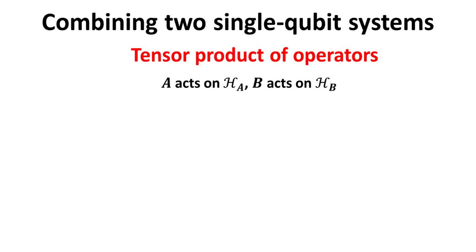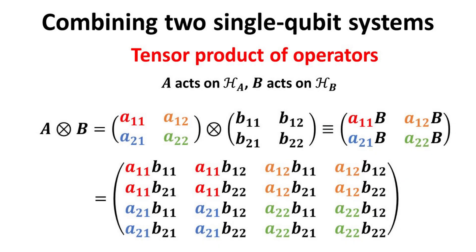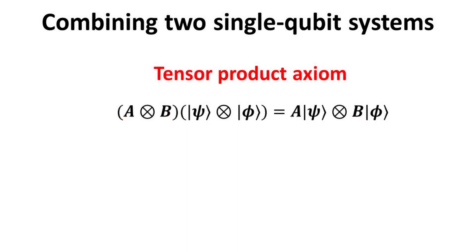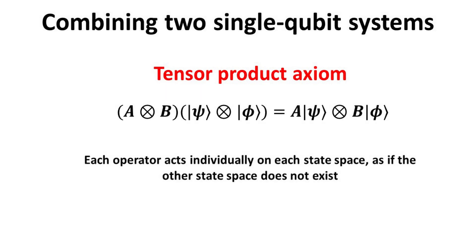Now, what happens to the operators in this two-qubit composite system? The new operator is also given by the tensor product of the two operators from the constituent systems, herein denoted as operator A and B. We show explicitly the tensor product of two square matrices. The tensor product takes the dimensionality from 2×2 to 4×4 — each element of matrix A is concatenated with the 2×2 matrix B, producing a final matrix of dimension 4×4. The operator A tensor B acting on the composite state psi tensor phi equals the tensor product of A acting on psi with B acting on phi. In other words, each operator simply acts on its respective state space, followed by their tensor product.